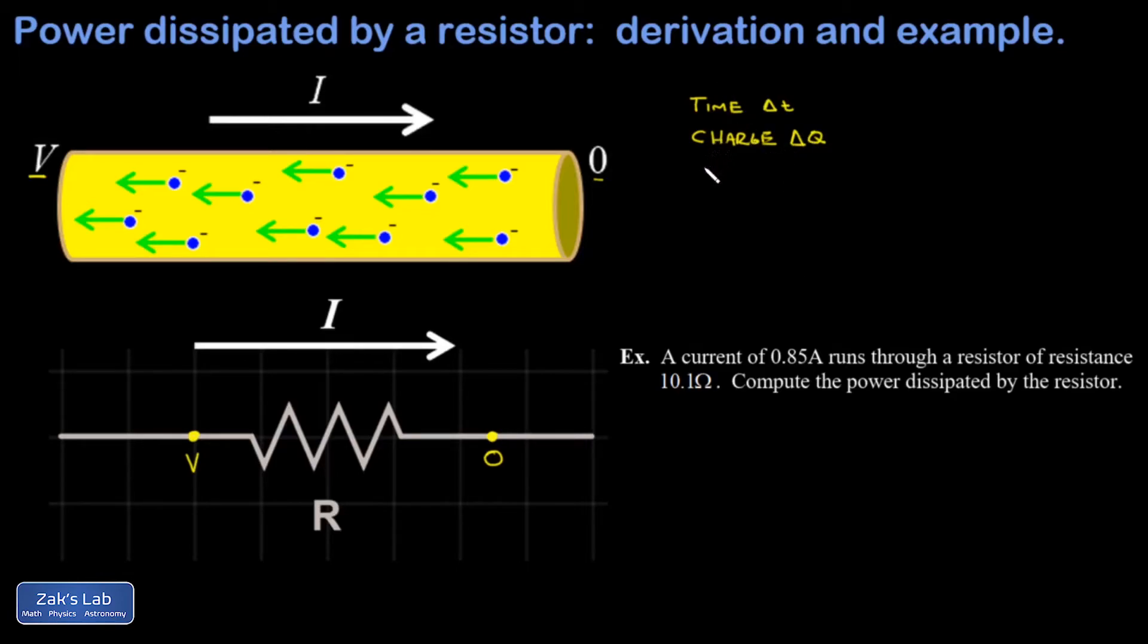So I'm going to write down the potential energy change of my charge delta Q. The general formula for that is Q delta V, but our charge is delta capital Q. And our delta V is final minus initial, which is zero minus big V. And I end up with negative delta Q times V. So there's our energy loss in a time of delta T.